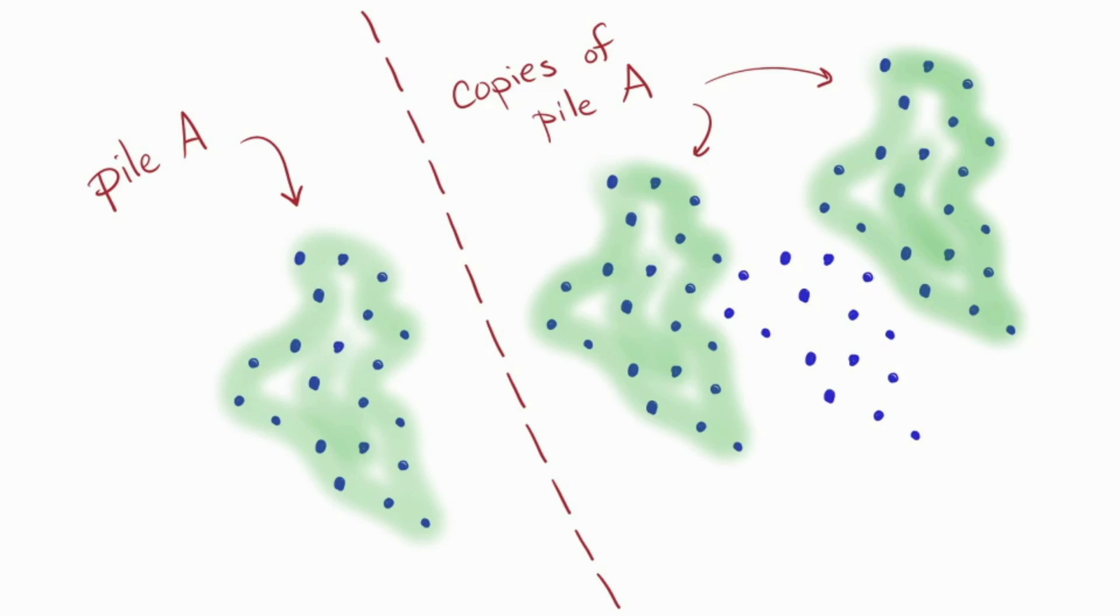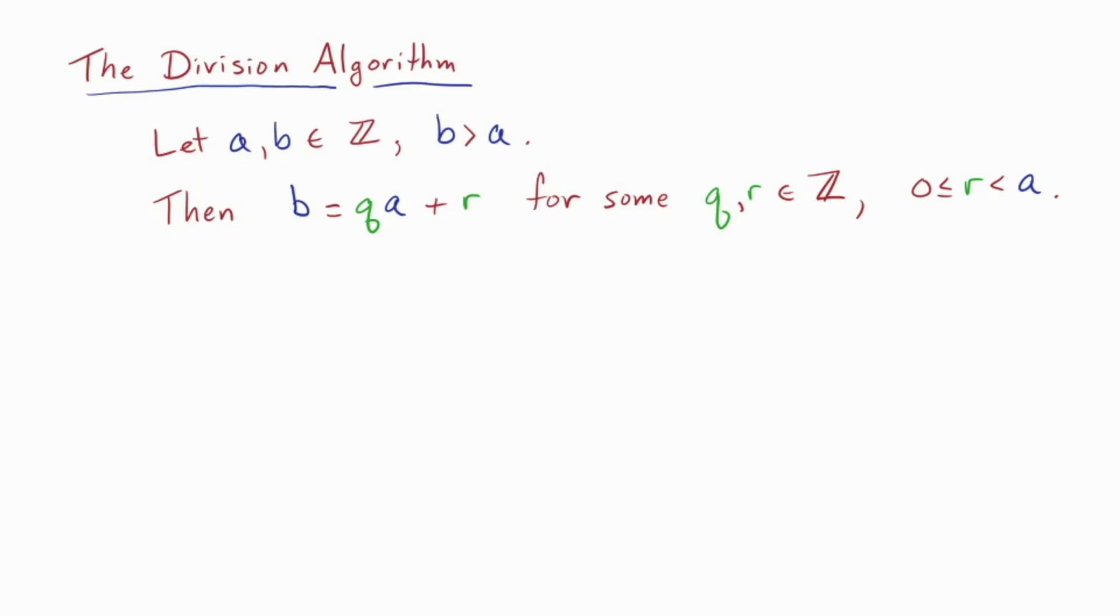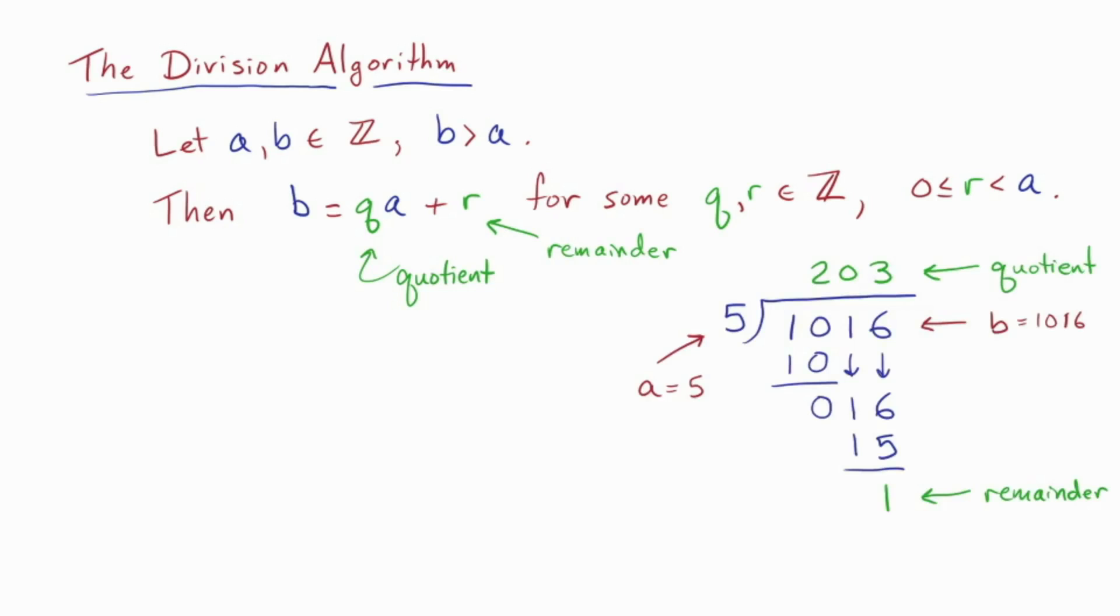Okay, how might we make it more efficient? So we'll use what's called the division algorithm, which is just the observation that given an A and a B, with B bigger than the A, we can write B as some number of A's plus R, where R is the remainder, which is somewhere between 0 and A minus 1. The Q stands for quotient. This is the output you get from the good old-fashioned division algorithm that you learned in school. So for example, 1016 is made up of 203 copies of 5, with a remainder of 1.